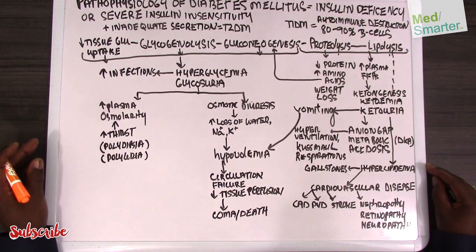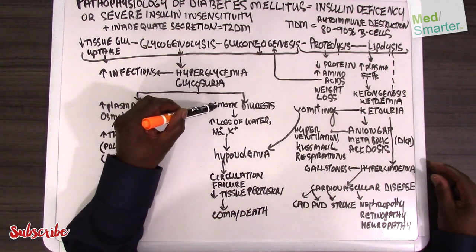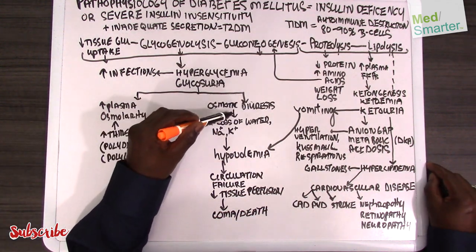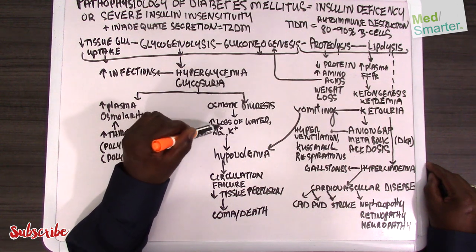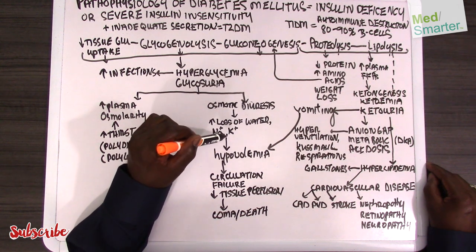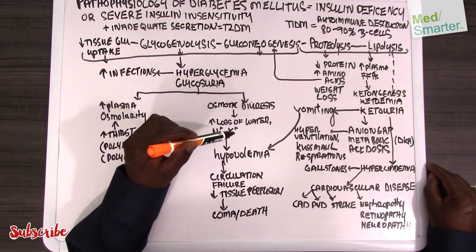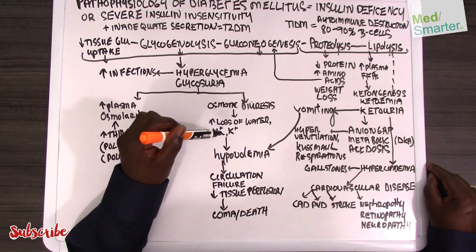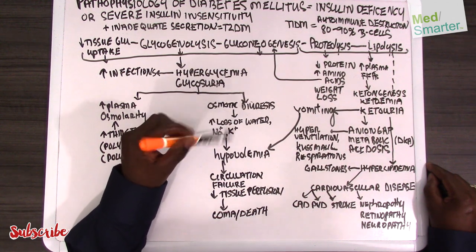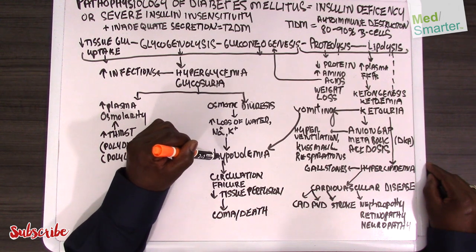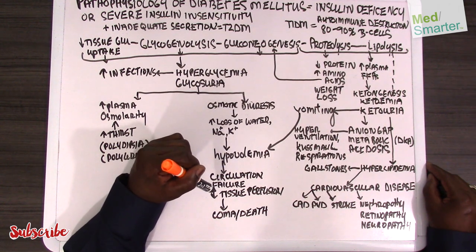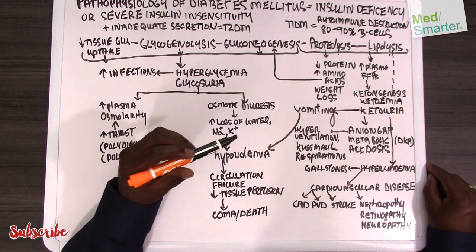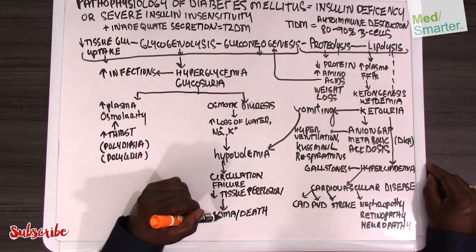The hyperglycemia is also going to result in an osmotic diuresis. That osmotic diuresis is going to cause an increased loss of water, sodium, potassium, and other electrolytes such as magnesium and phosphorus in the urine. The loss of sodium and water is going to result in hypovolemia. This hypovolemia will result in circulatory failure and decrease in tissue perfusion, tissue hypoxia, and if not intervened upon, this will result in coma and death.